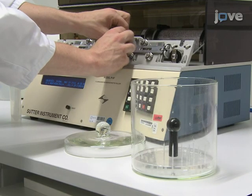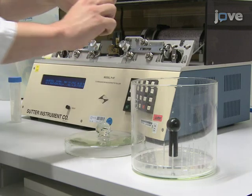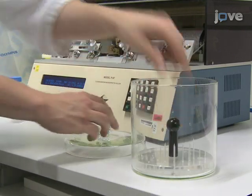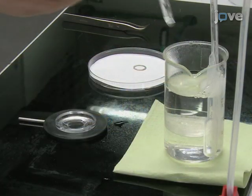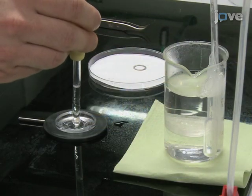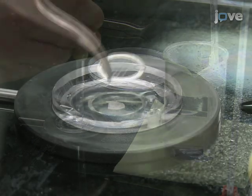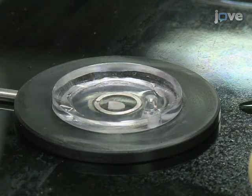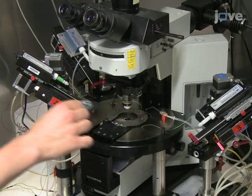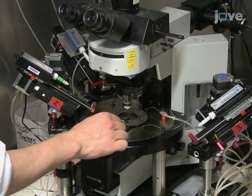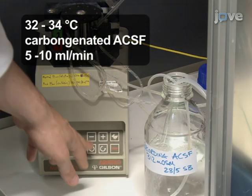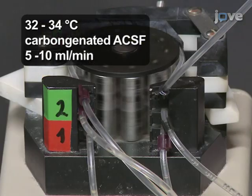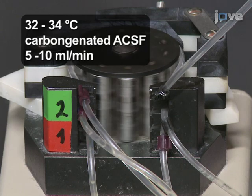Pull patch pipettes from glass capillaries so that a pipette resistance of 2 to 4 mega-ohms is achieved when filled. Transfer a hippocampal slice to the recording chamber, holding it in place with a platinum ring strung with single fibers of silk. Place the chamber into the recording setup and begin perfusion with carbogenated warmed recording ACSF at a flow rate of 5 to 10 milliliters per minute.